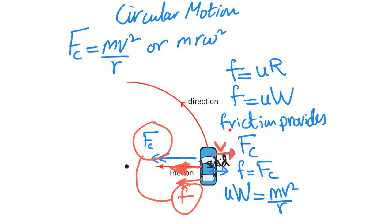By skidding outwards you have velocity v in the outward direction. So if the car skids outwards, what is the direction of friction? The direction of friction would be inwards. Why do you need the friction to be inwards? Because friction is going to provide the centripetal force, and you need the centripetal force to make this turn.